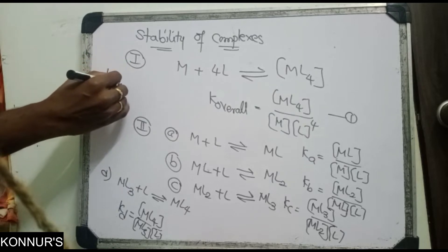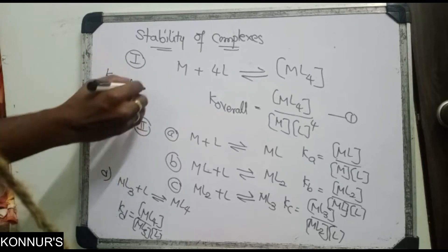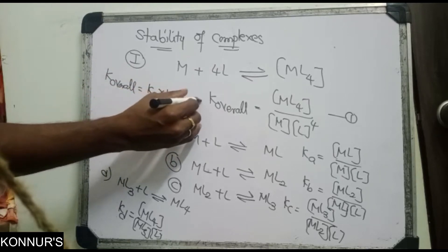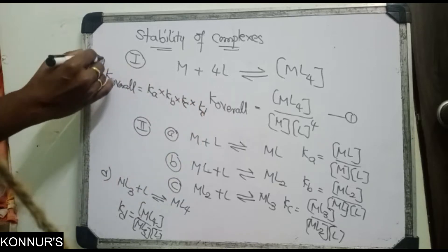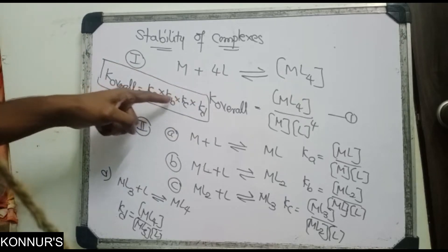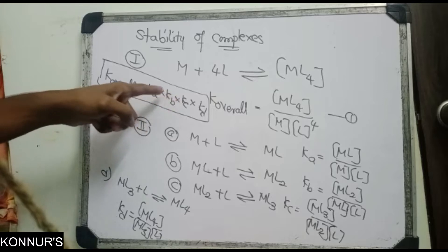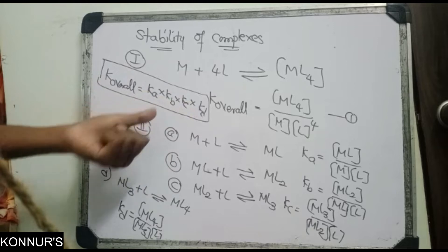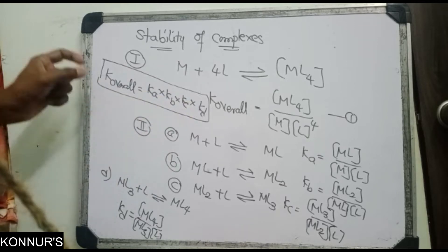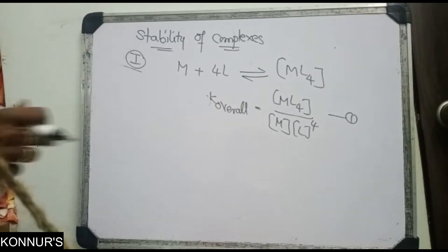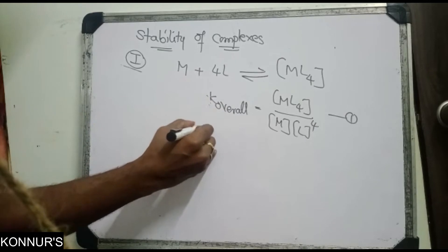The relation is: K overall = Ka × Kb × Kc × Kd. In examinations, they may ask about this directly — they might put plus, minus, or Ka×Kb / Kc×Kd as options. This K overall is also called the stability constant.